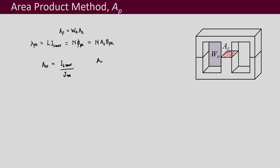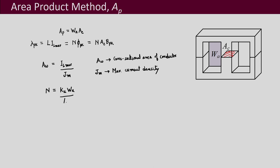The cross-sectional area of the conductor AW equals IL_max divided by JM, where AW is the cross-sectional area of the conductor and JM is the maximum current density. Further, the number of turns N can be written as Ku × WA divided by AW.